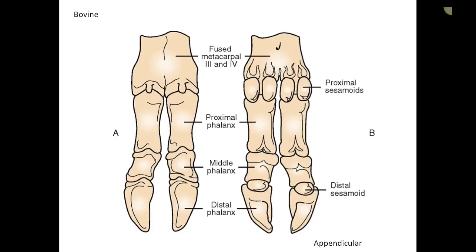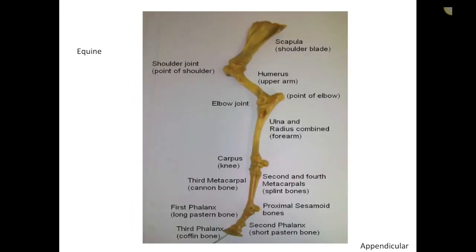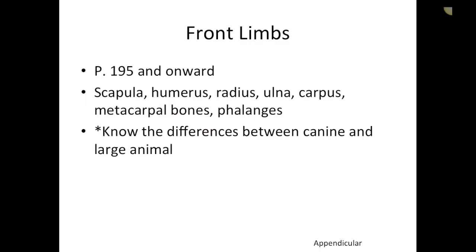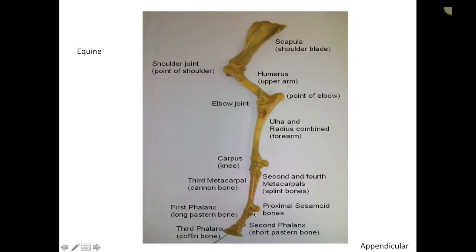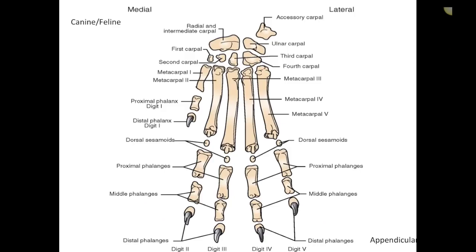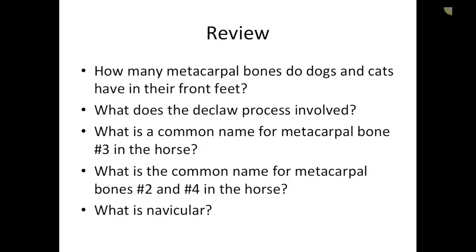In horses, the proximal sesamoid bone is also called the fetlock. The distal sesamoid bone is called the navicular bone. Horses can develop significant issues with the navicular bone — overwork can cause swelling of the tendons and soft tissue surrounding it, causing the horse to go very lame very quickly. It's often a very long course of treatment and not always curative.